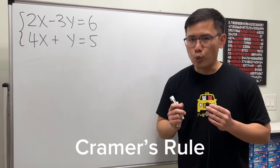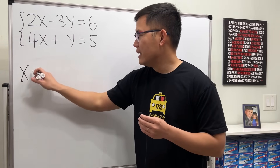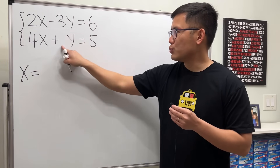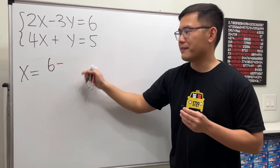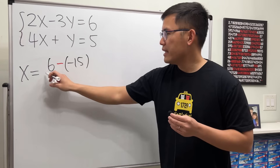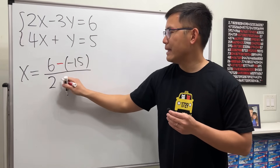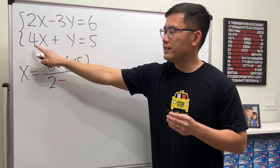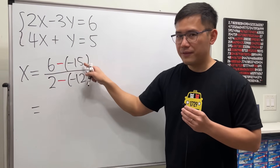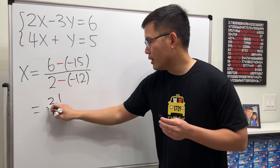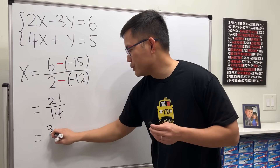The last way is called Cramer's rule, which allows you to solve for x and y right away. x is equal to: we do 6 times 1 first, which is 6, and then minus negative 3 times 5, which is negative 15 — over 2 times 1, which is 2, and then minus negative 3 times 4, which is negative 12. So 6 plus 15 is 21, and 2 plus 12 is 14. Reduced by 7, we get 3 over 2.